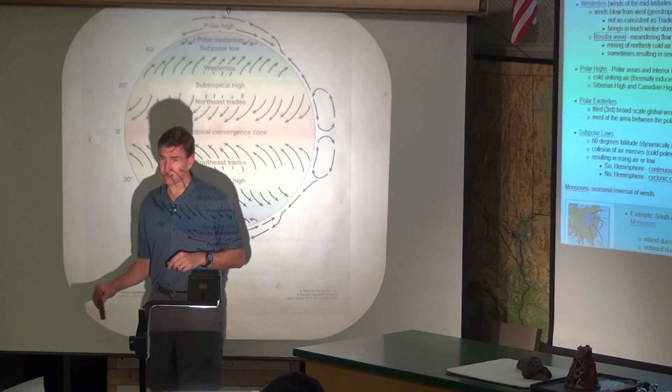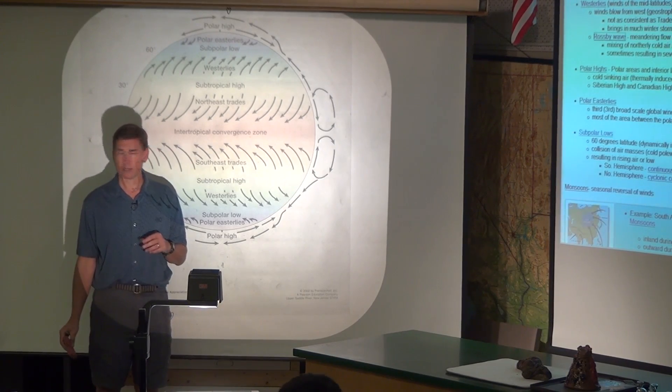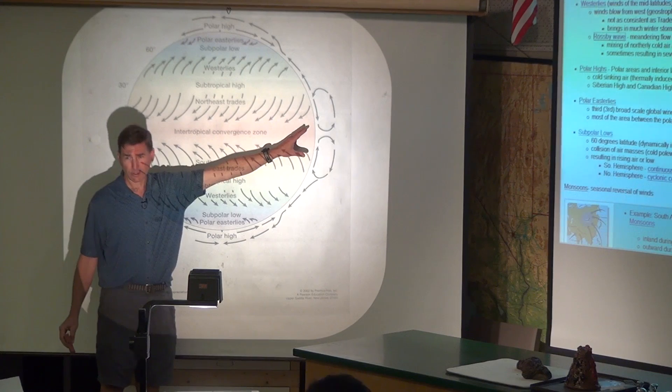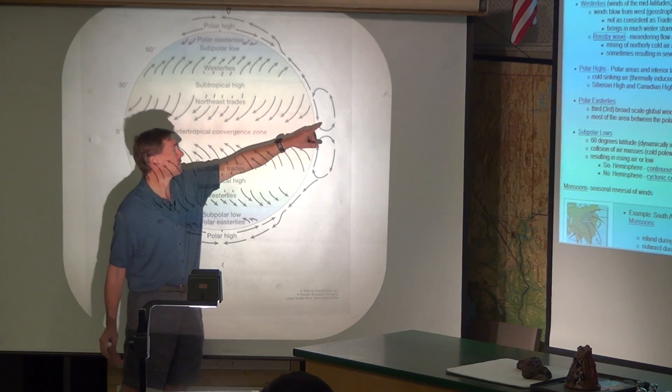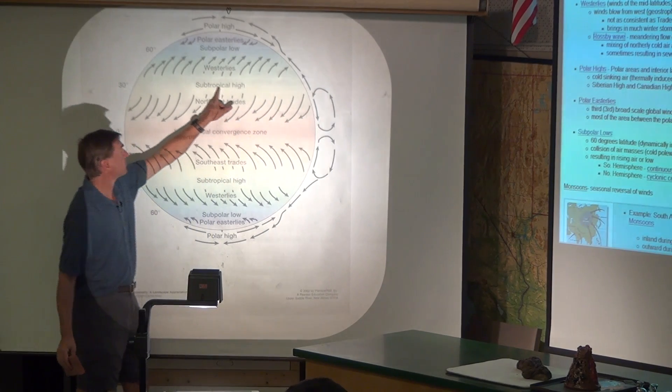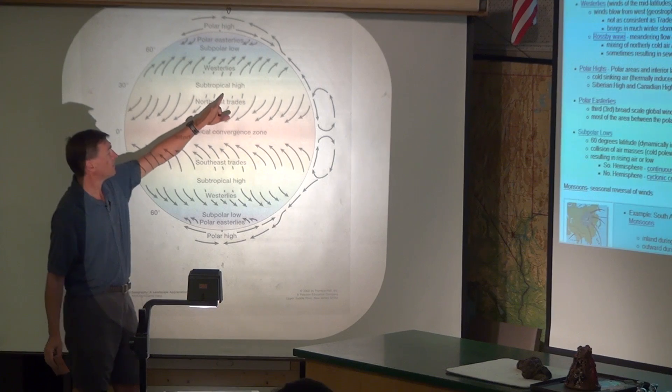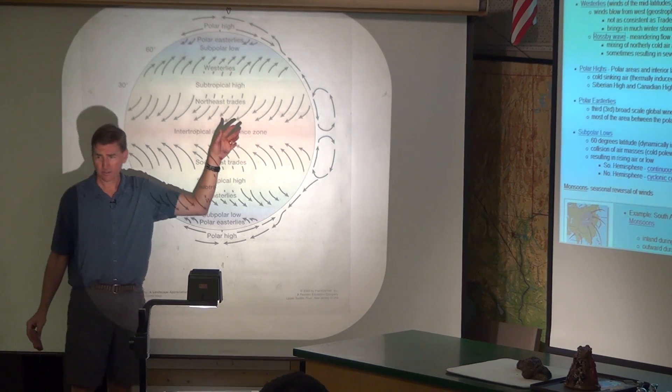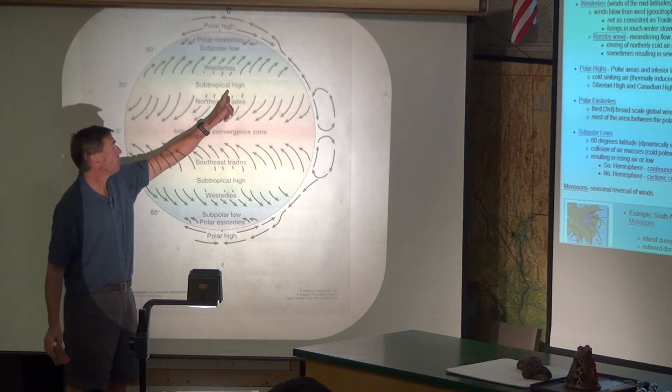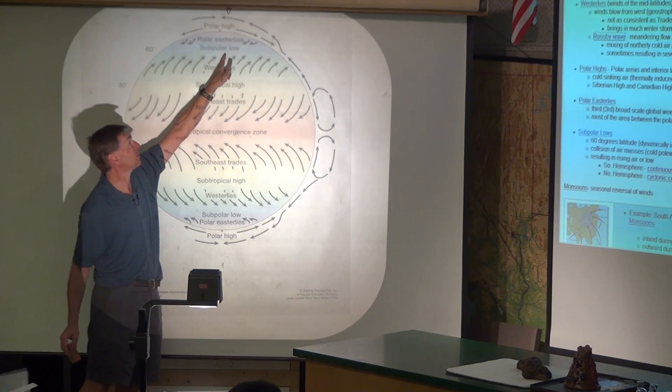Okay, so last time we talked about the intertropical convergence zone and the subtropical high pressure system. Air rises at the equator—it's a low pressure system—goes up into the upper atmosphere and then descends at about 30 degrees. That's the subtropical high pressure system. The winds that come off of there are the trade winds and the westerlies.